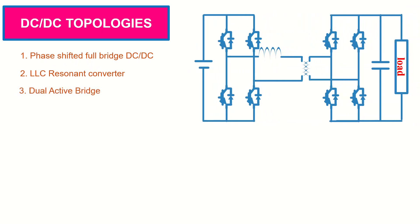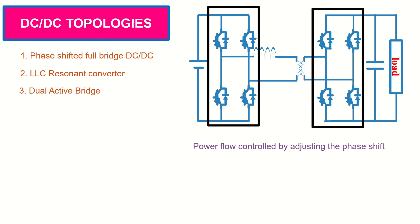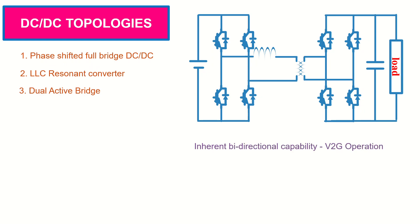Another topology is the dual-active bridge. It has switches on both the primary and secondary bridge. Power flow between the input and output is controlled by adjusting the phase shift between primary bridge and the secondary bridge. Because of its inherent bi-directional capability, the circuit is more suitable for applications that require vehicle-to-grid operation. The circuit can also achieve zero-voltage switching and hence high efficiency. Drawback of the circuit is that control becomes complex when used for wide-voltage range applications.